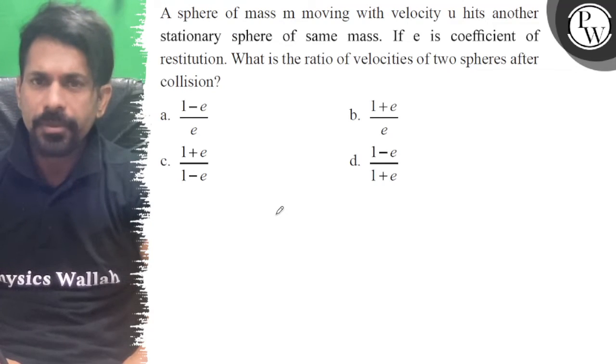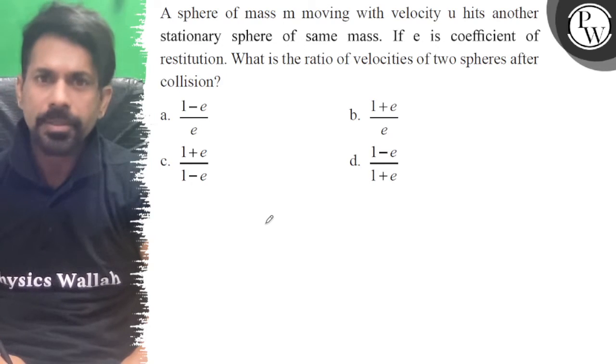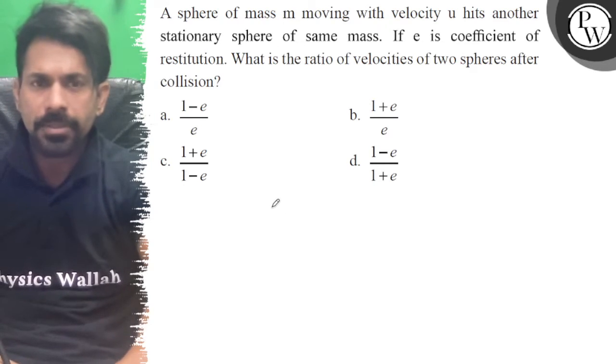Hello, let's see the question. A sphere of mass m moving with velocity u hits another stationary sphere of same mass. If e is the coefficient of restitution, what is the ratio of velocities of two spheres after collision?